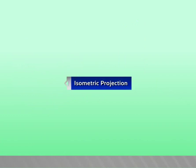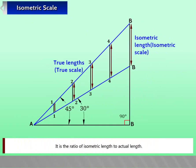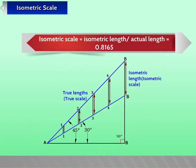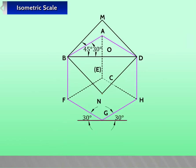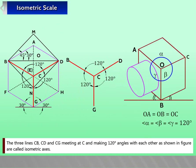Isometric projection is a pictorial projection method in which all the dimensions of a solid are equally foreshortened, i.e. reduced to isometric scale. The isometric scale is the ratio of isometric length to actual length, equal to 0.8165. The three lines CB, CD, and CD meeting at C and making 120-degree angles with each other are called isometric axes.